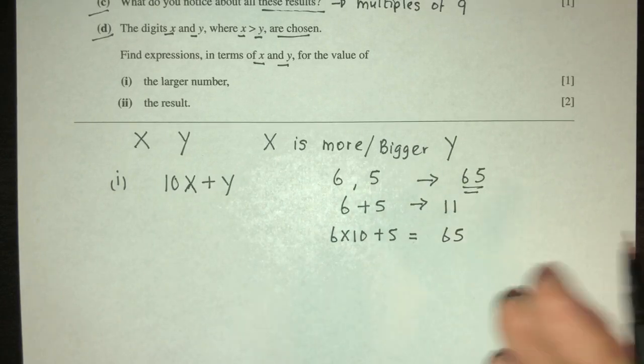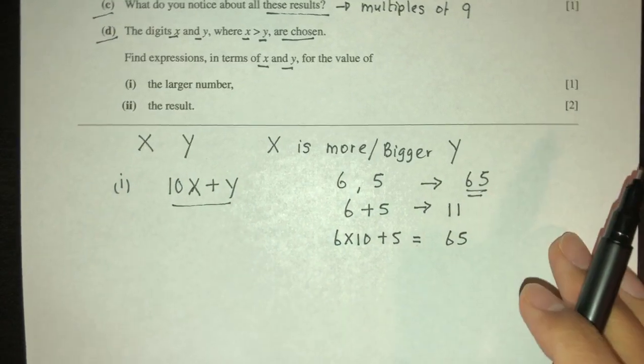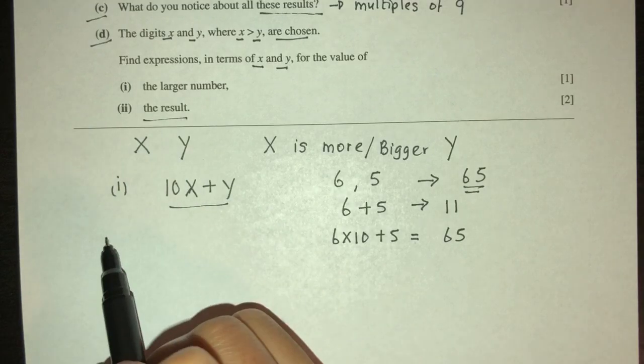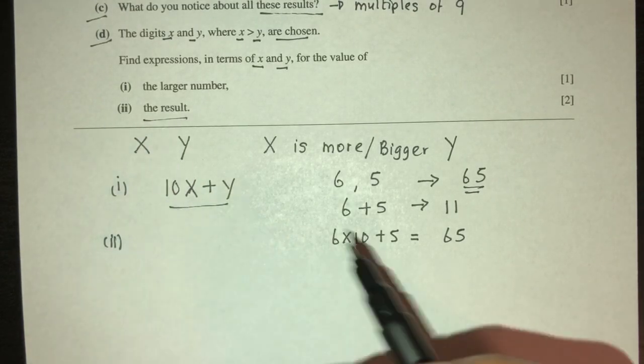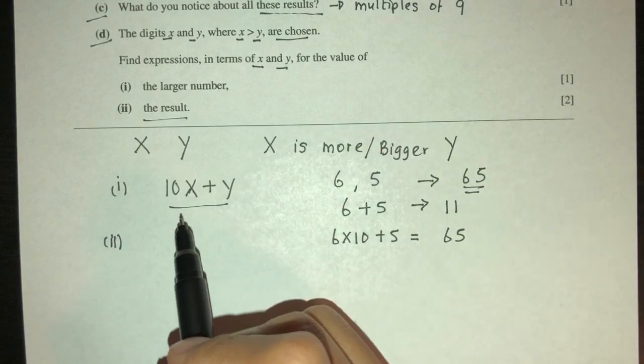Now for part two, we have to find the result. So now we have to find the result, which is - also we have to find the smaller number. So smaller will be 10y plus x.